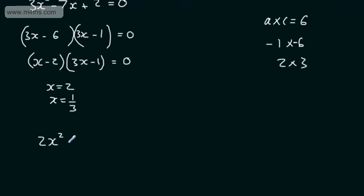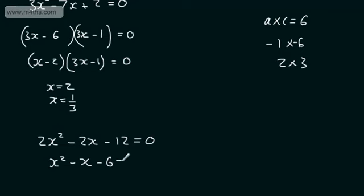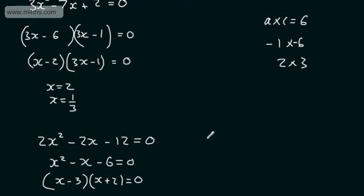For 2x² - 2x - 12 = 0, first check for a common factor — dividing everything by 2 gives x² - x - 6 = 0. This factors as (x - 3)(x + 2) = 0, which we solved earlier. Always check if you can simplify by dividing through by a common factor first.